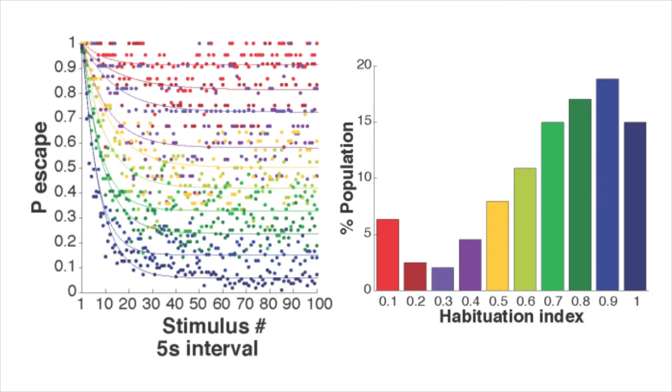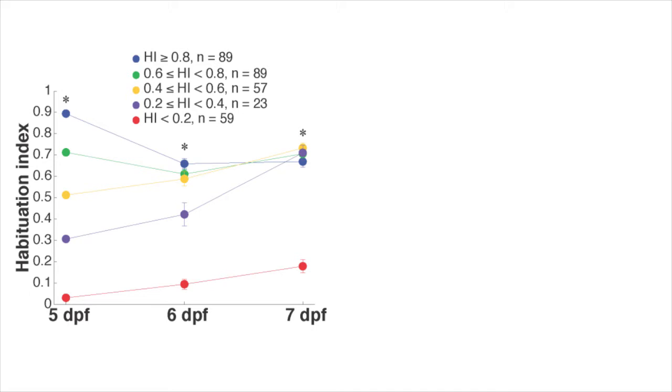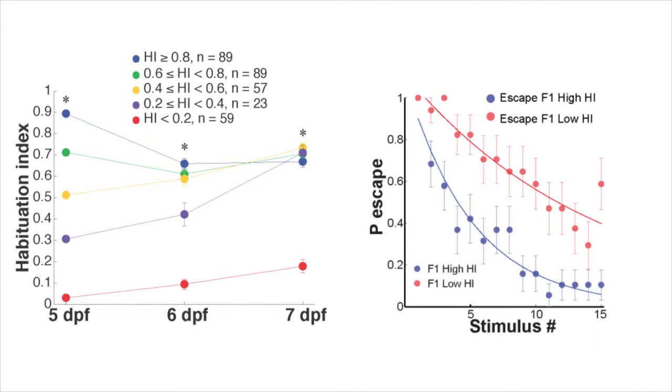Moreover, differences between low and high habituating individuals were stable when tested repeatedly over three days and were heritable. These results indicated that the habituation of the acoustic startle response is a type of animal personality trait.